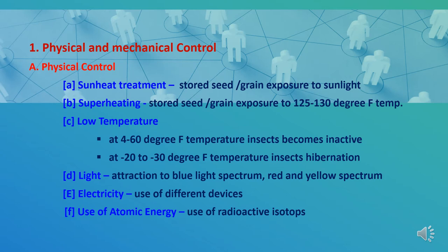Fourth is light treatment. It has been observed that insects are attracted to light. Investigations show that insects are much more strongly attracted to the blue portion of the spectrum, then red, then yellow. Fifth is electricity, where different devices are used to produce sufficient heat within the bodies of insects to kill them. Sixth is the use of atomic energy, where nuclear physics helps in controlling insects by using radioisotopes.